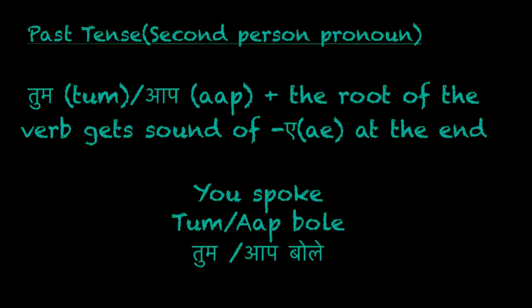Now for the past tense, the second person pronouns are 'tum' or 'aap.' The root of the verb gets an 'a' sound at the end. For example, 'you spoke' — tum or aap bole — so the root verb is getting an 'a' sound at the end.